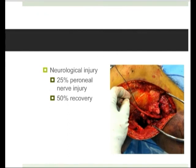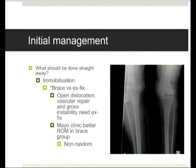In terms of imaging, x-ray findings after reduction may show nothing at all, or maybe subtle joint widening. MRI is probably the investigation of choice, but image quality isn't always great and you can't always rely on what it shows. If you're going to put an ex-fix on it initially, remember to use the MRI-compatible one.